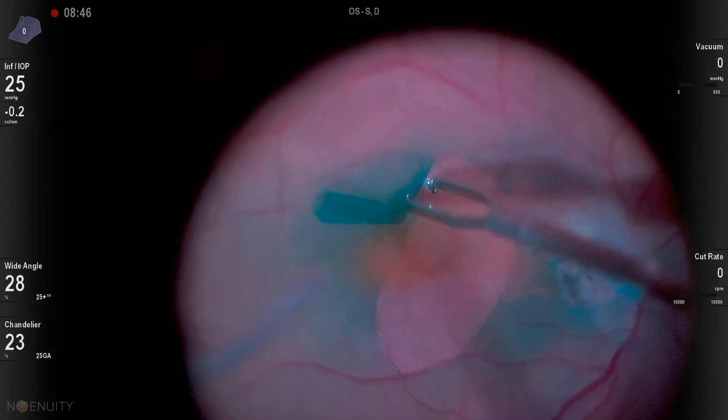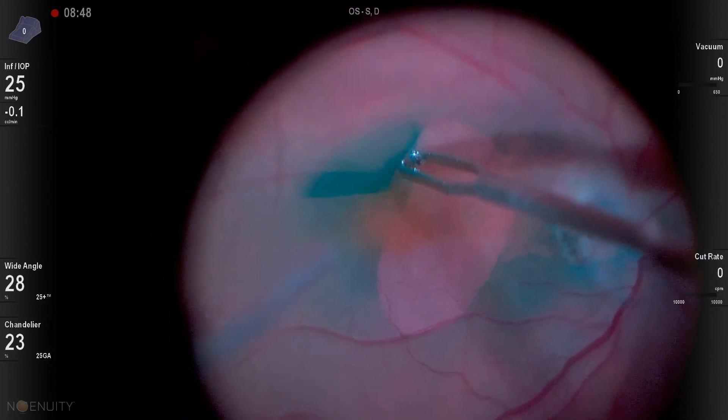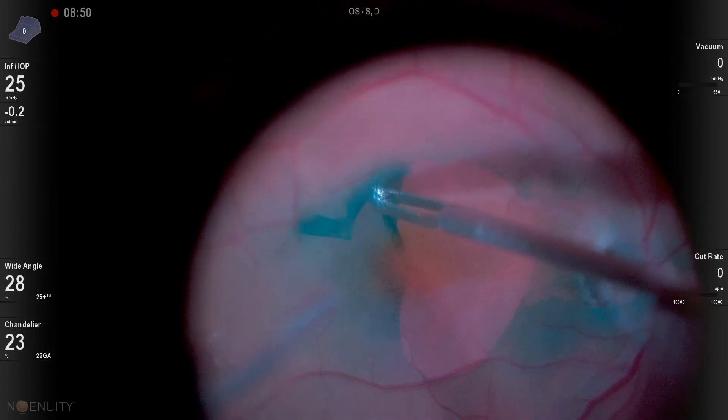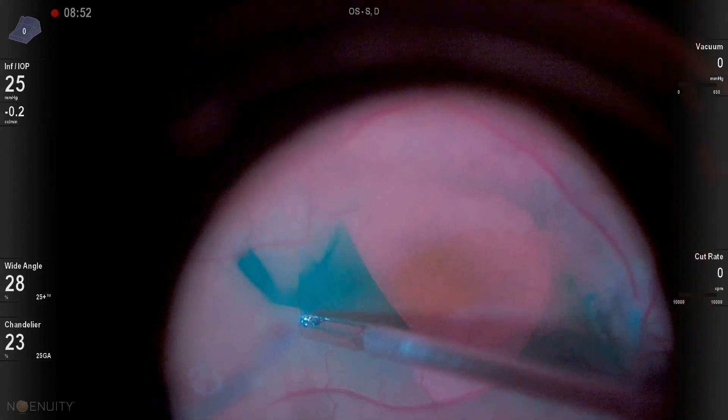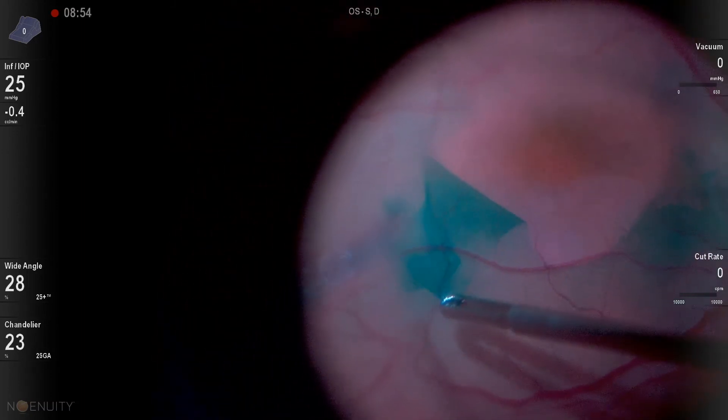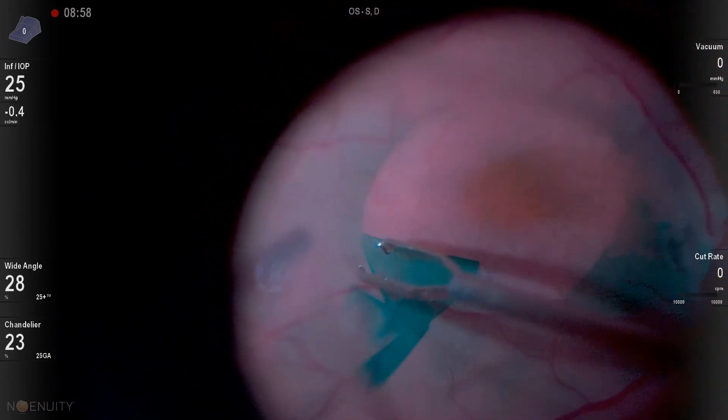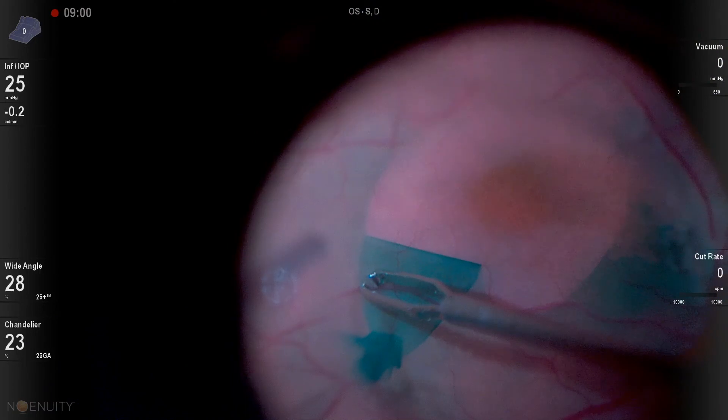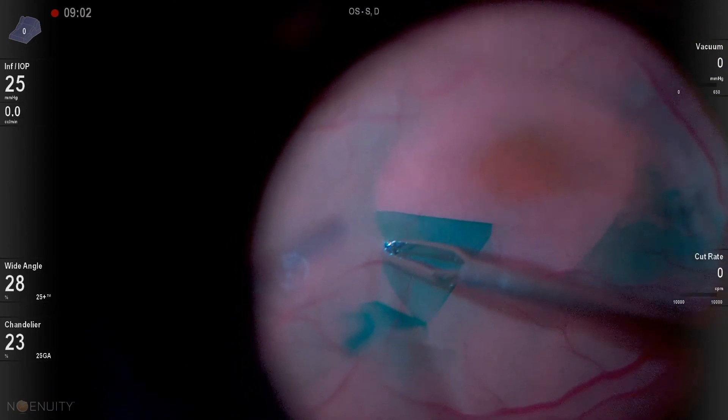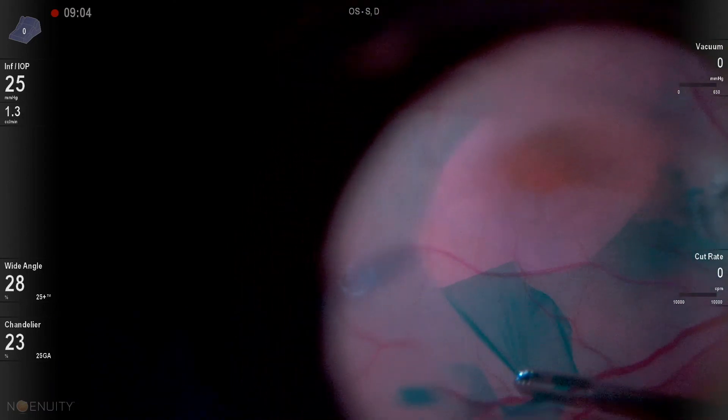But despite that, I was able to get the ILM up really nicely in one really nice kind of widespread confluent sheet. Now, in the past, I've tried to tuck this ILM back into the disc pit hole, and I just find that's not successful. So I just go ahead and peel the ILM and remove the ILM from the eye.